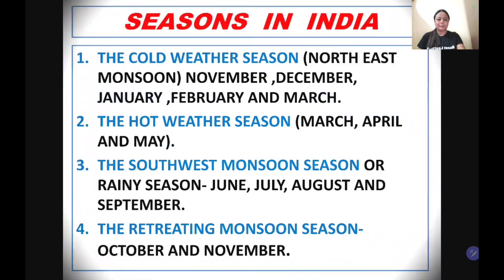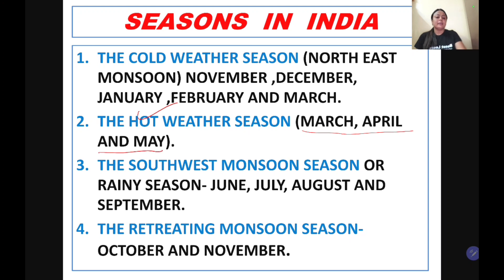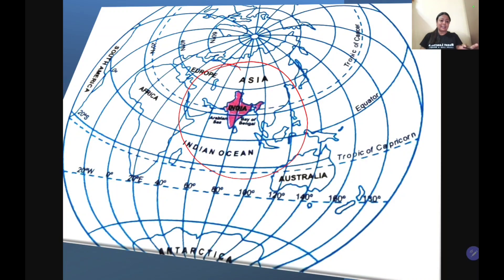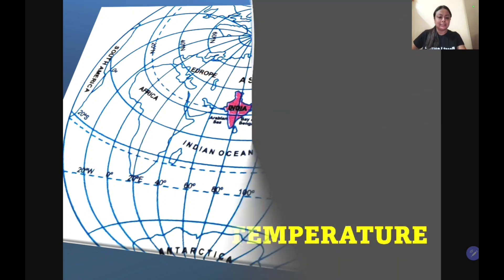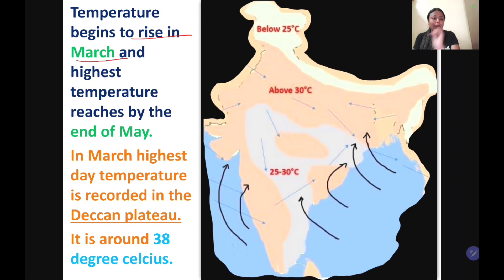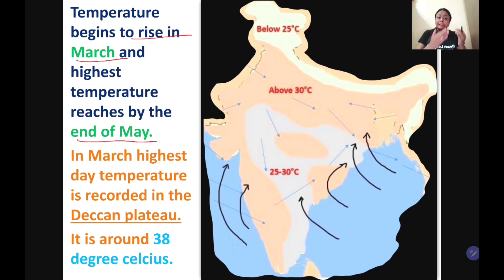Now we move to the next season in India — the hot weather season, experienced from March till May. India is in the northern hemisphere, which now starts coming towards the sun. From March, temperature starts rising and reaches its maximum by the end of May, after which the rainy season begins in June.